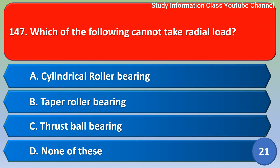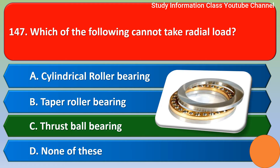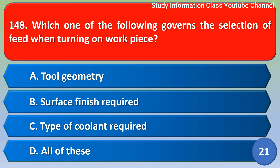Next question: Which of the following cannot take radial load? Option A: cylindrical roller bearing, Option B: taper roller bearing, Option C: thrust ball bearing, Option D: none of these. The correct answer is Option C, thrust ball bearing.